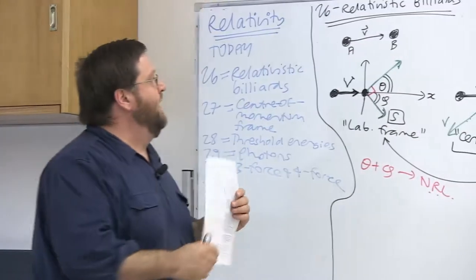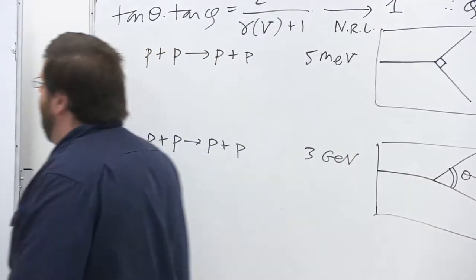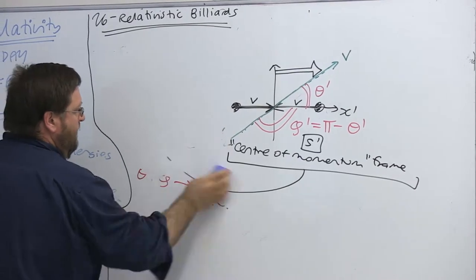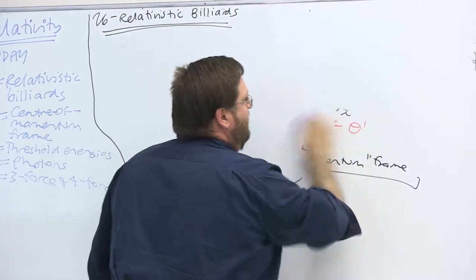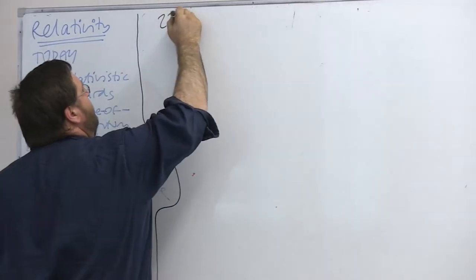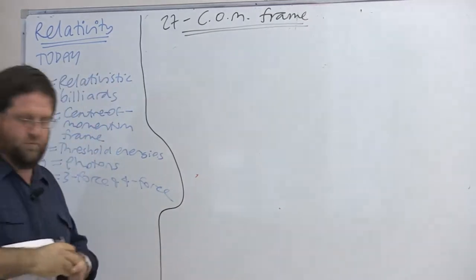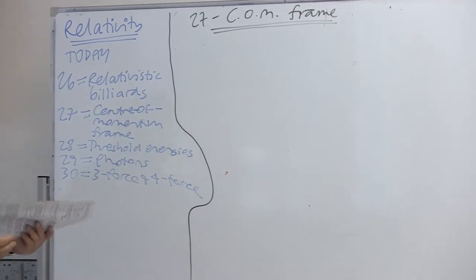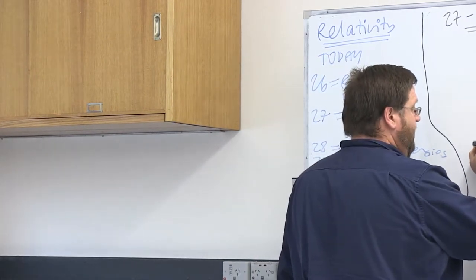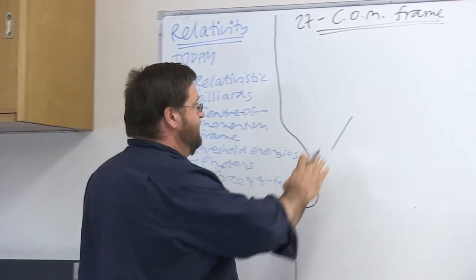That's it for relativistic billiards. I want to move to section 27, the centre of momentum frame. We've already seen the utility of working in a frame where the total momentum vanishes. Now I want to generalize this. Instead of two particles colliding, I want multiple particles undergoing collisions — a series of world lines in space-time, straight lines corresponding to free particles.